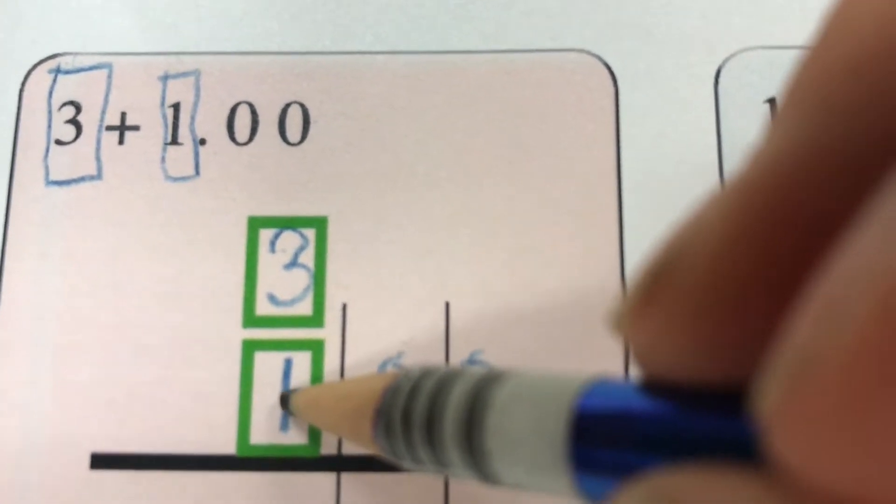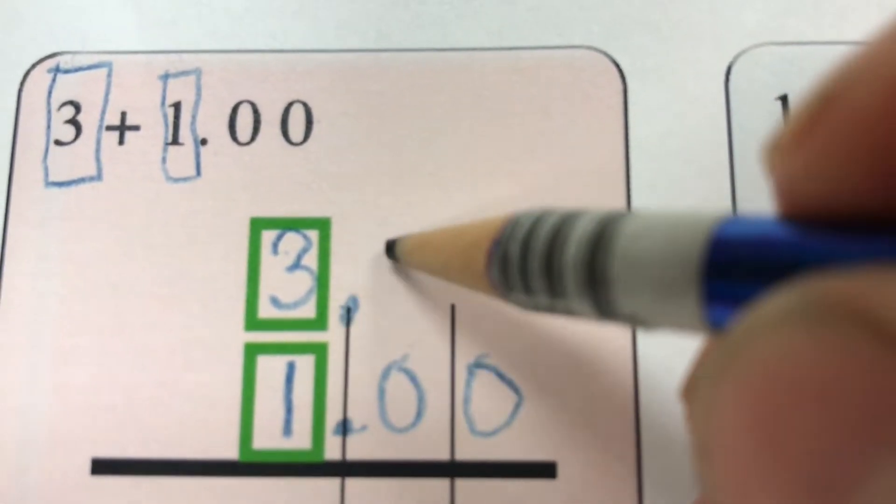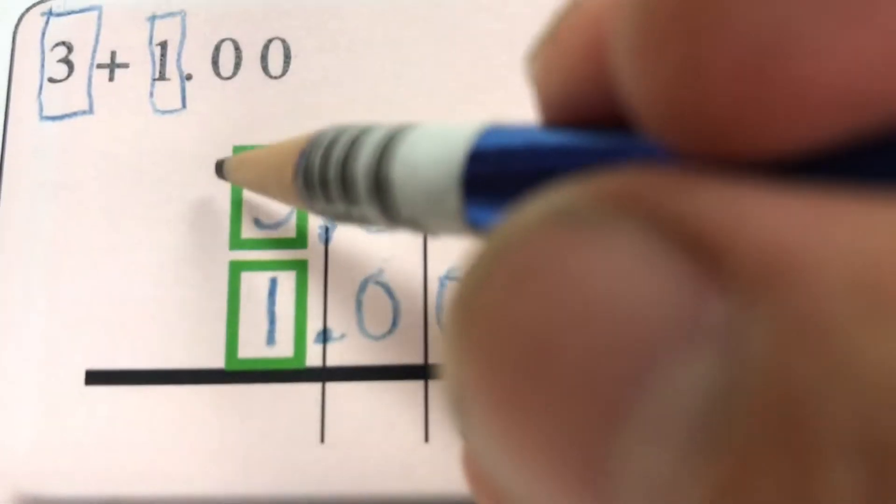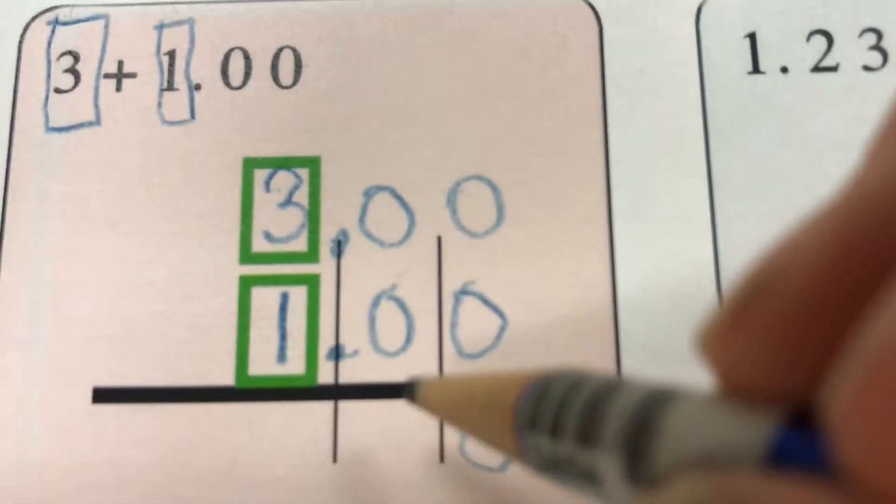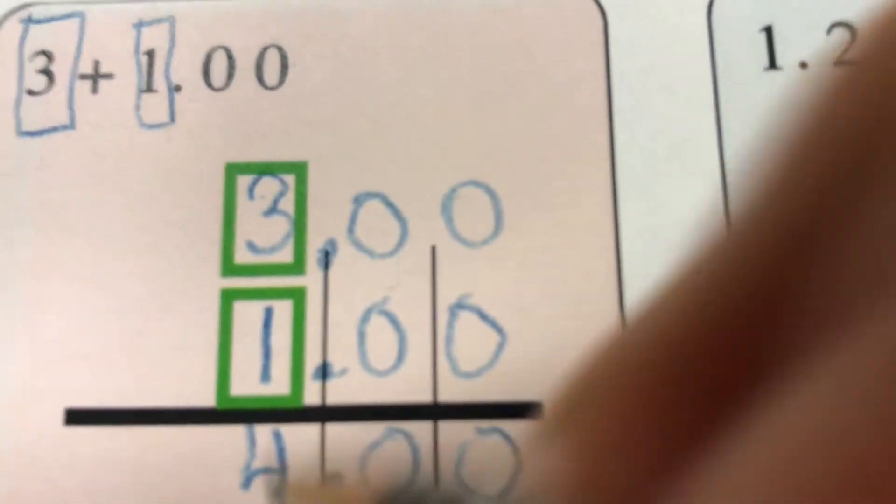Here we have one dollar, zero dimes, zero pennies. And we can also say that we have zero dimes, zero pennies here. This structure gives us a total of zero pennies, zero dimes, and four ones.